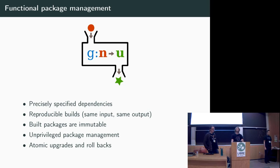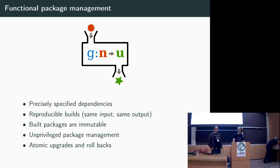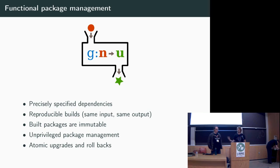Another important thing: built packages are immutable. With a traditional distribution, we're familiar with the /usr directory — when we install a package, we shove stuff in there and modify it, and sometimes we go in and tweak it. You don't do that in Guix. The result of a package build is immutable, and from that we get consistency and reliability. You can also manage packages without being the root user — unprivileged. That's very important. And we get atomic upgrades and rollbacks, which means either a package installation will work or nothing happens. You could unplug the power cord and you'd never be left in an inconsistent state.